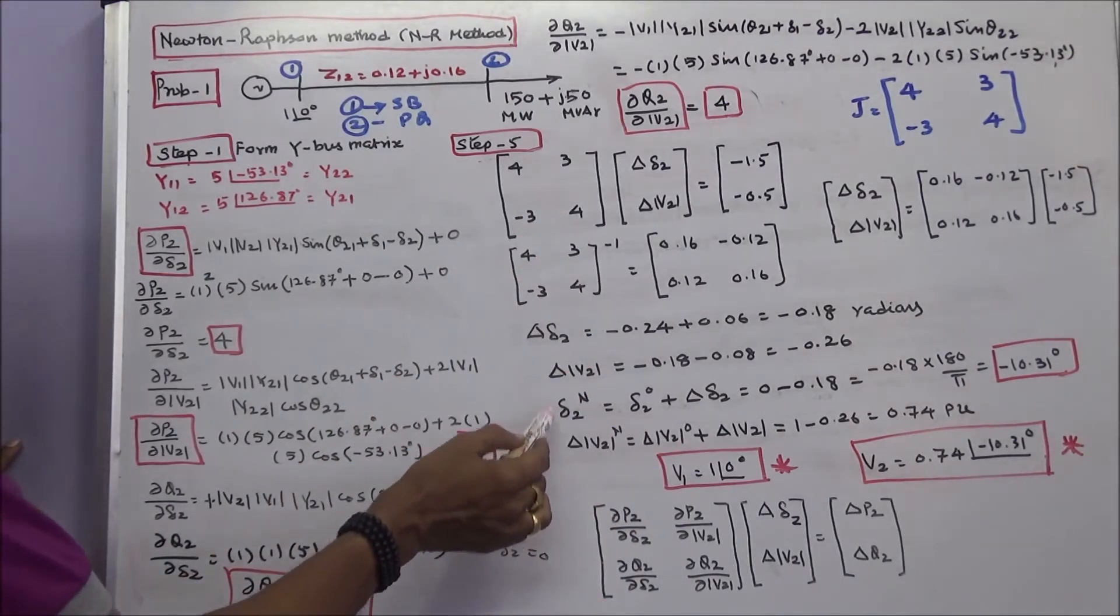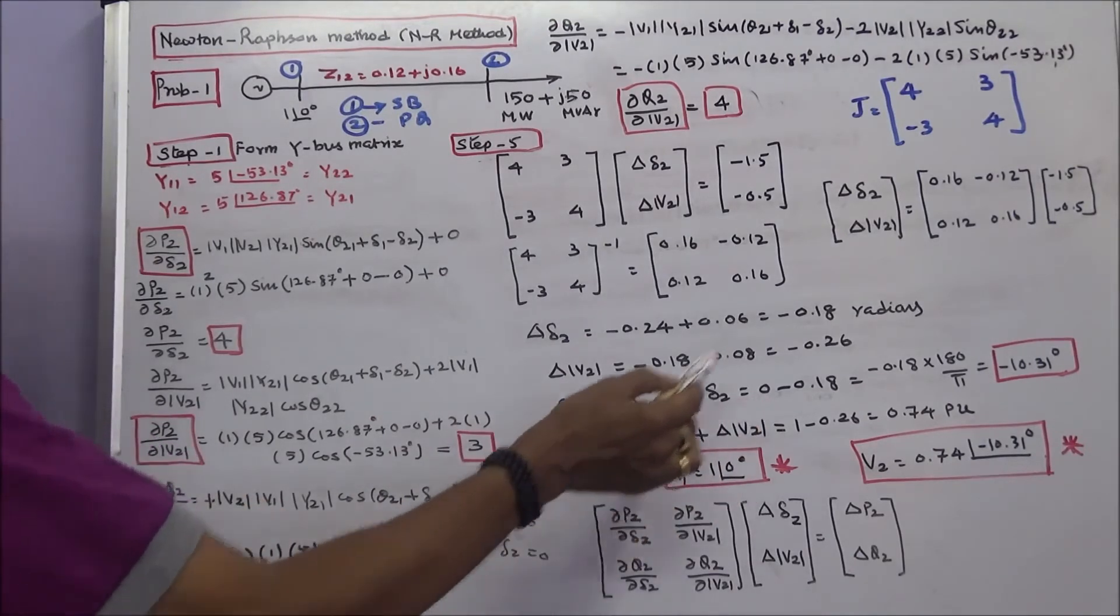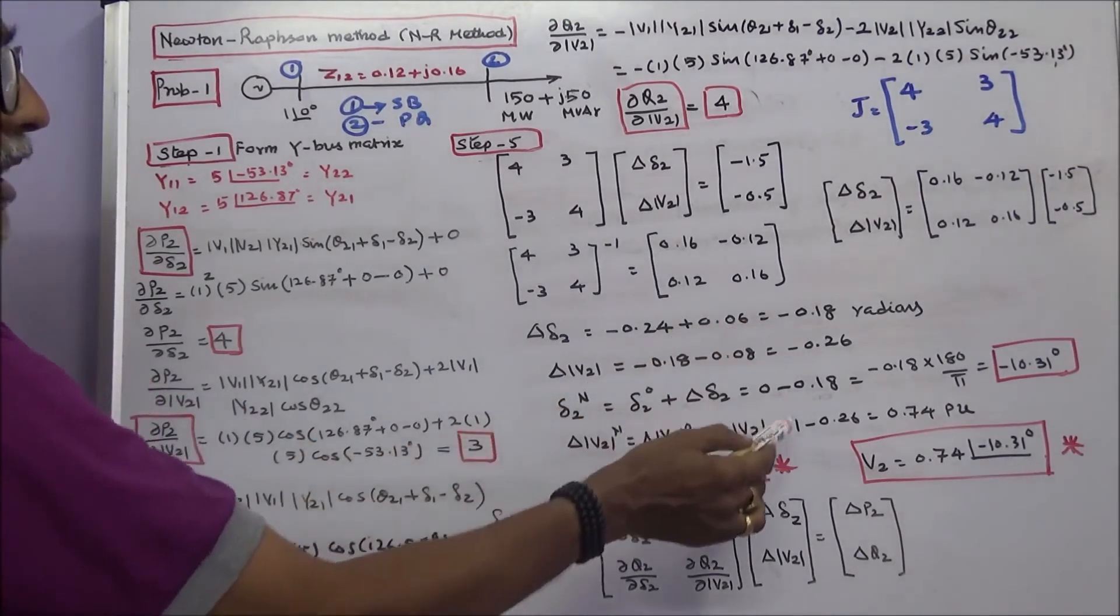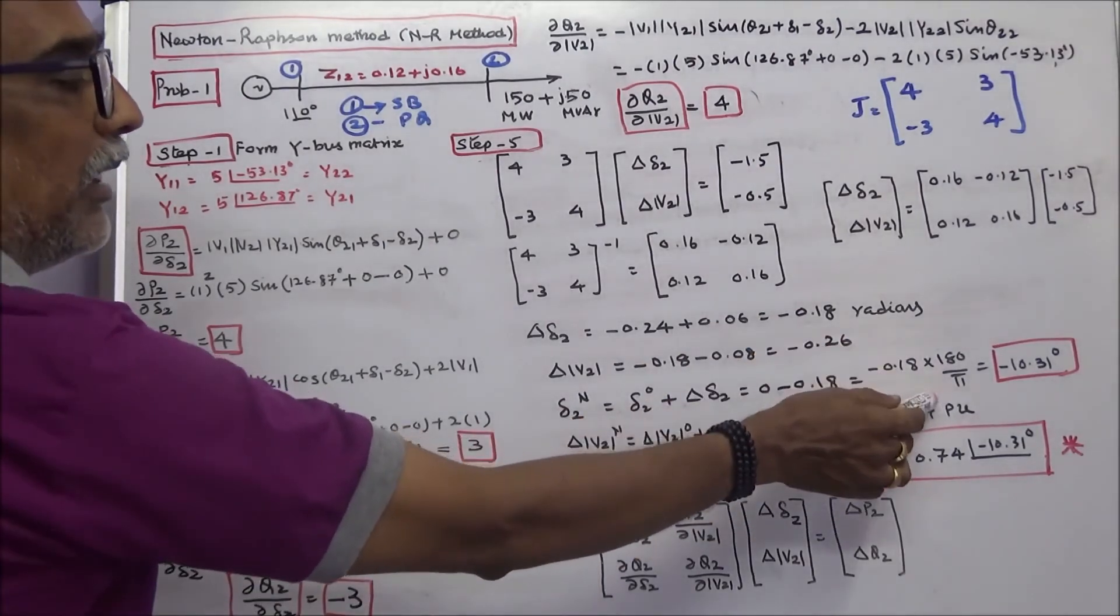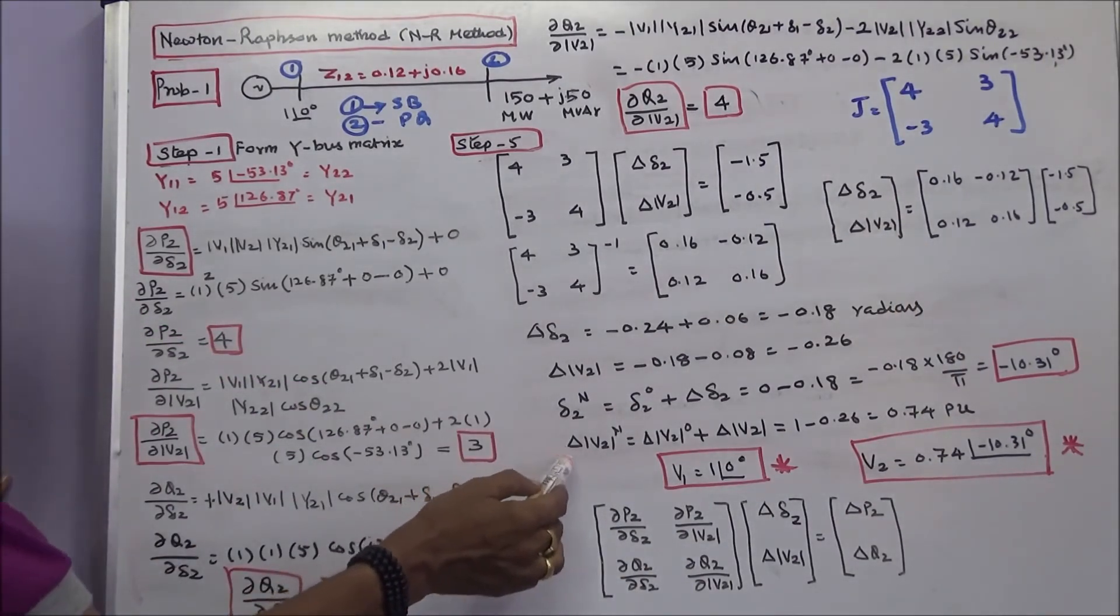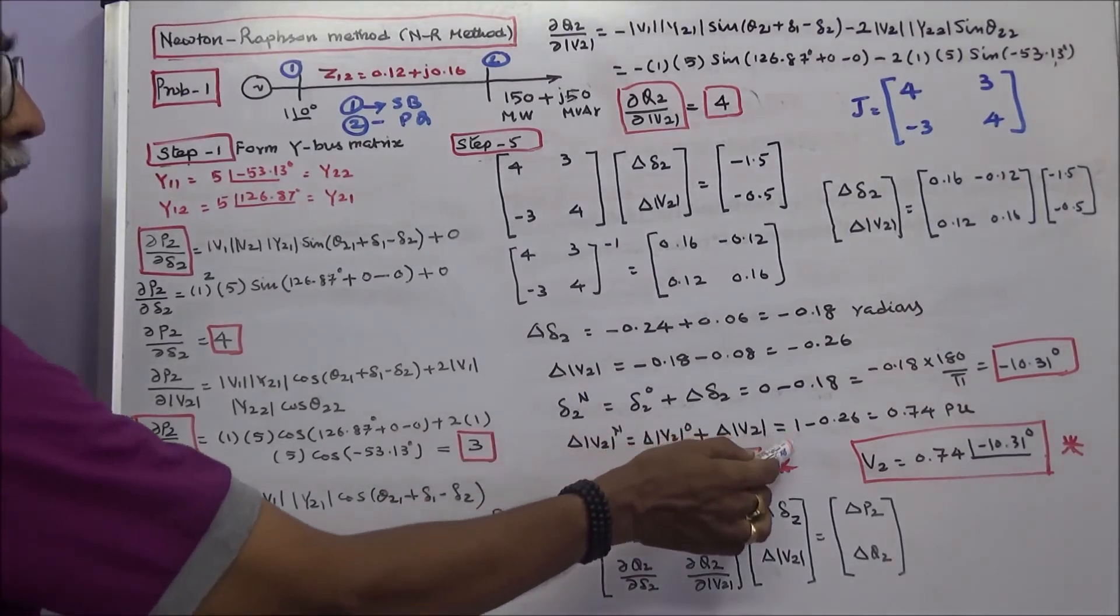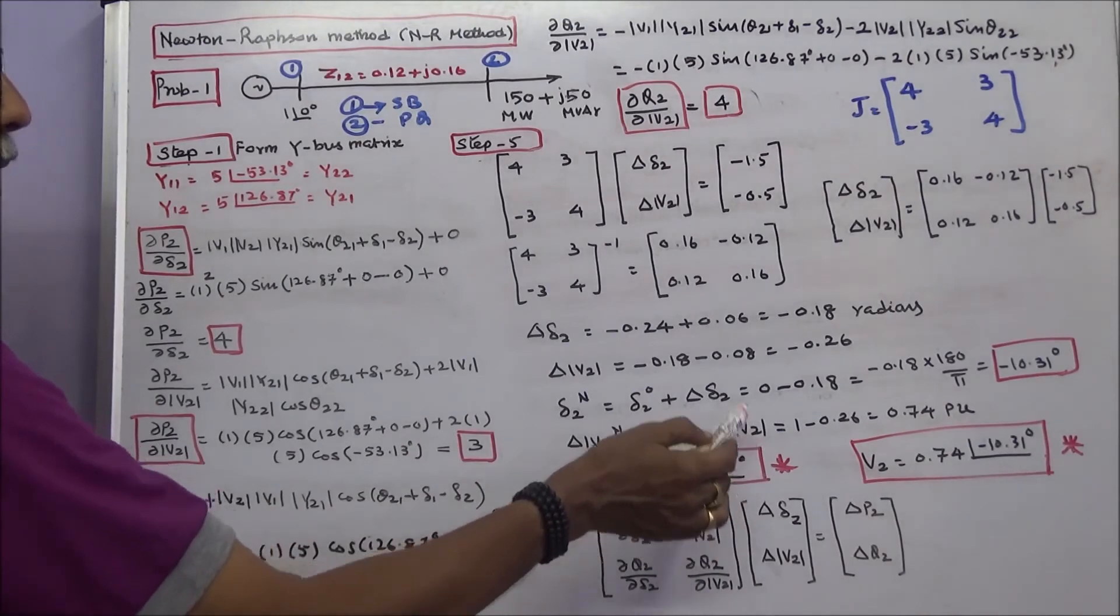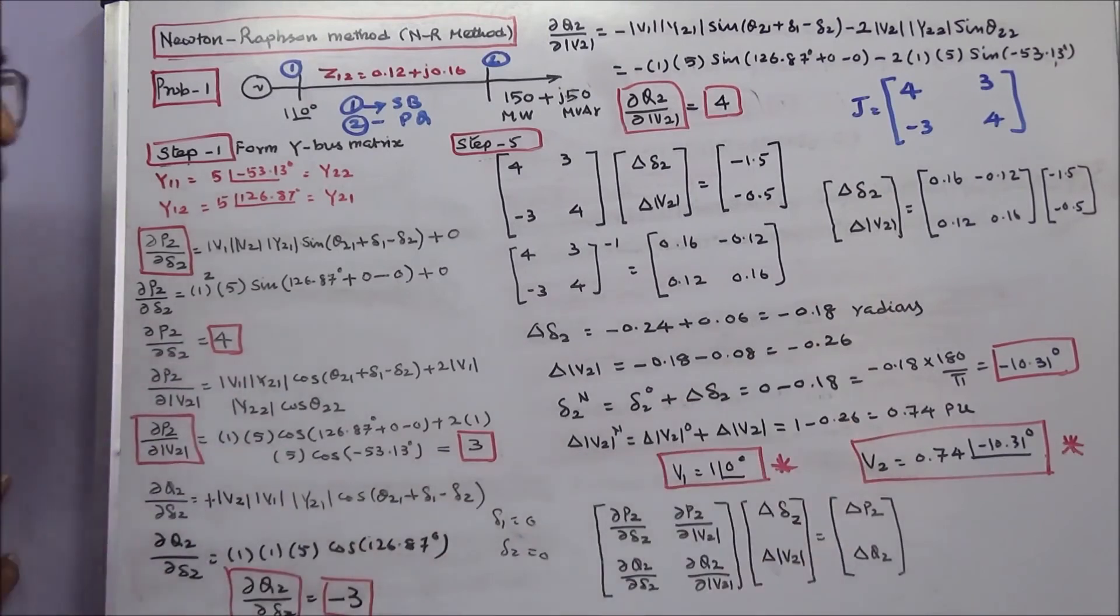Now, δ2 new equals δ2 old, which is 0, plus the calculated value -0.18. This is in radians. Similarly, |V2| new equals old value 1 plus del |V2|, the calculated value -0.26. This value is 0.74 per unit.